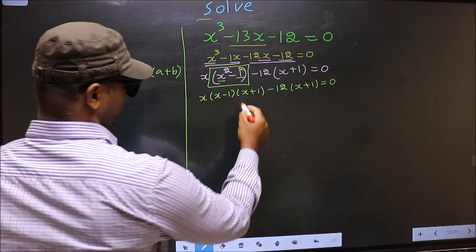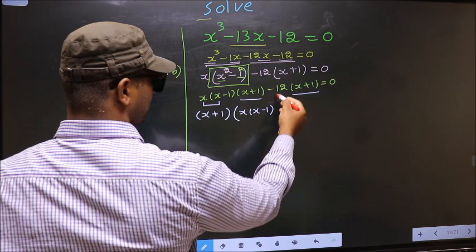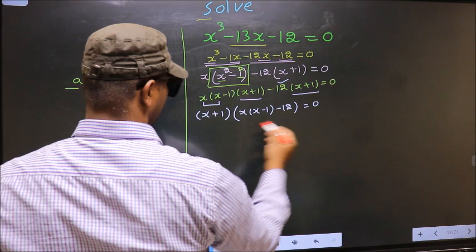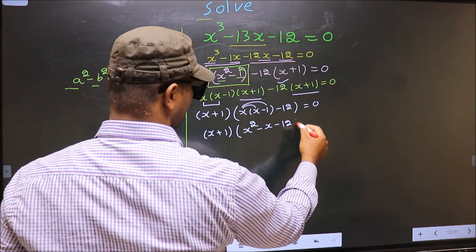Now from this entire equation what can be taken out common is (x plus 1). So (x plus 1) goes outside, and you are left with x times (x minus 1) from the first part and minus 12 from the second part equal to 0. Opening up the brackets gives x squared minus x minus 12 equal to 0.